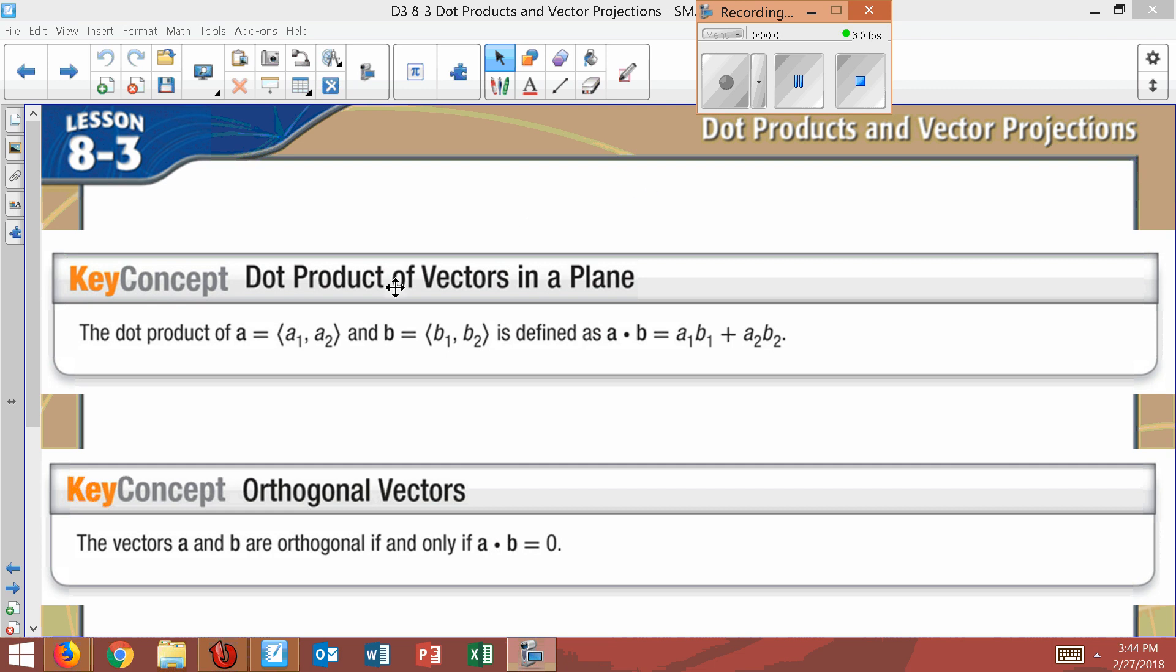Lesson 8.3. It begins with a term called a dot product. Now what a dot product is, is if you have a vector A and you have a vector B, it's how you multiply. And what's weird is you do not foil here or anything like that.